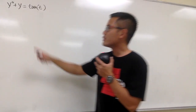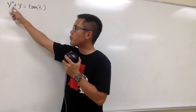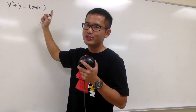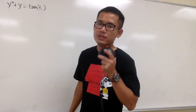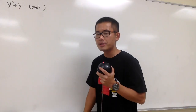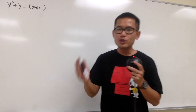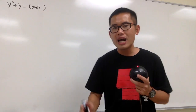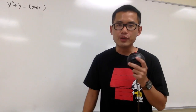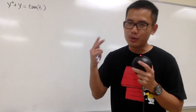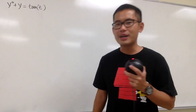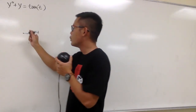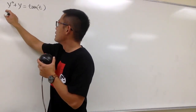I will show you how to solve y double prime plus y equals tangent t with variation of parameters. You should watch my previous video because I derived the system of equations — the two conditions that we need. Anyway, let's get to work right here.